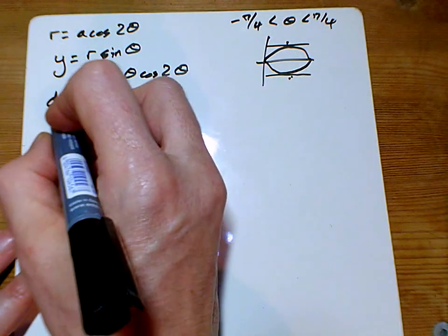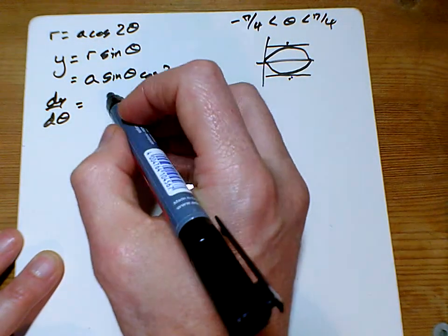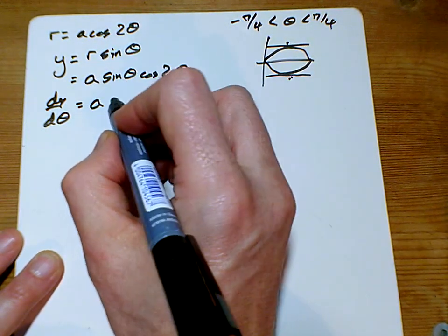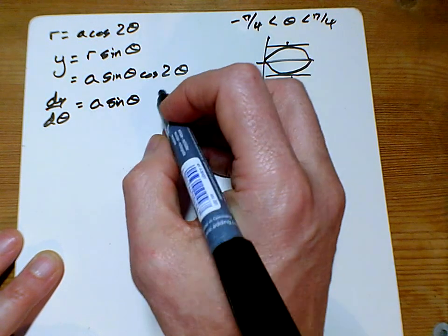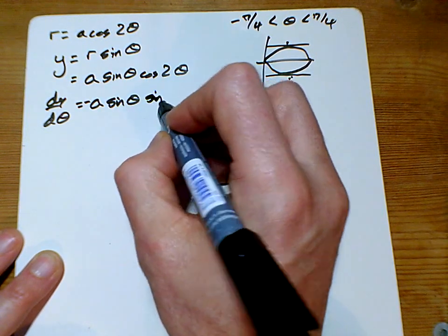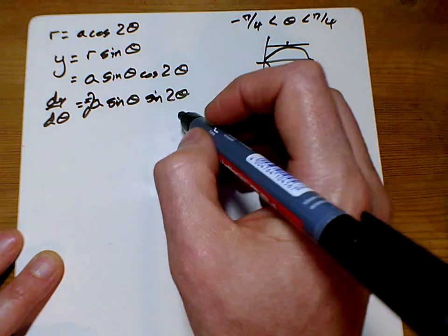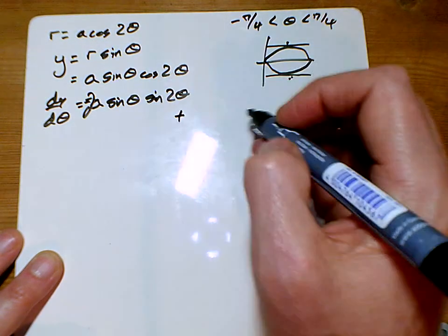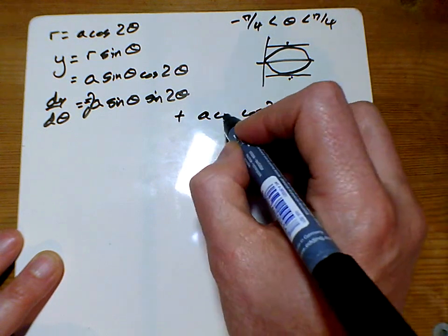We're going to differentiate that, and like lots of these, we've got a little product rule going on here. So I'm going to write down the first one and differentiate the second one. So cos differentiates to minus sin 2θ, and I need to times by the 2 as well. So I've also got to write down the second one and differentiate the first one.